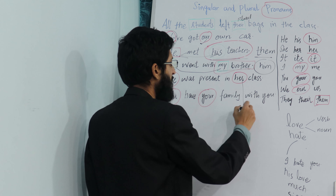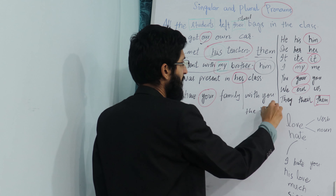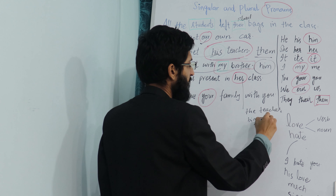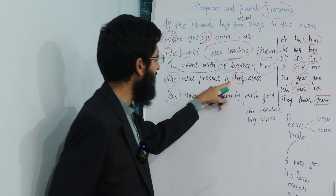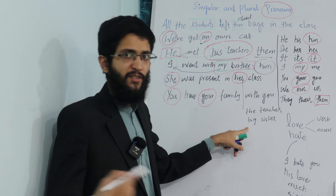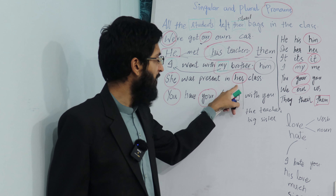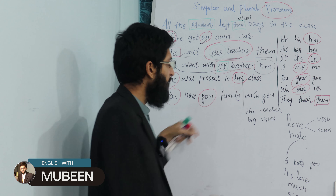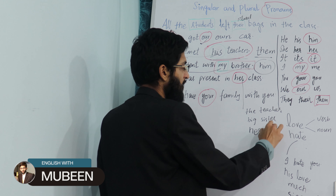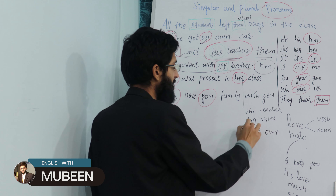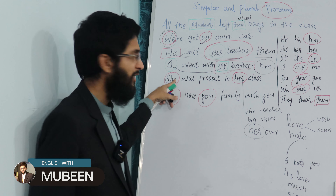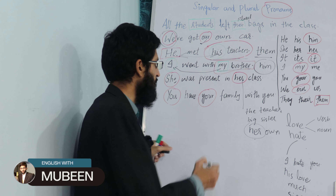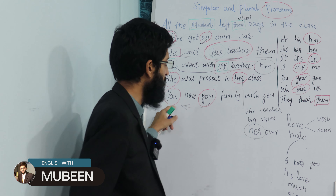Somebody can ask you who is 'him' — you would say 'my brother.' She was present in her class. 'Her' can be the teacher, her can be elder sister — like she was present in her elder sister's class. So 'in her class' means big sister's class, the teacher's class, or even her own class. 'Her' is linked with 'she.' She was present in her class. You have your family with you — 'your' is linked with 'you.'